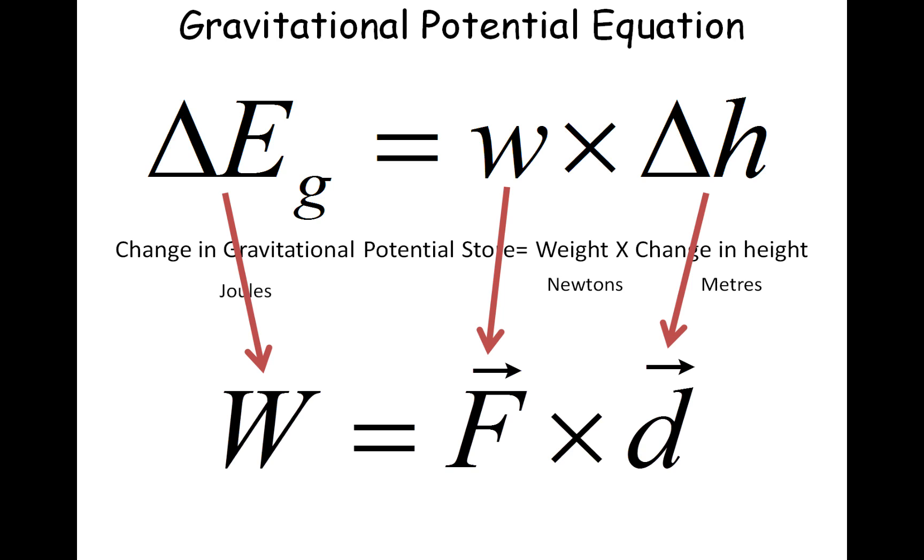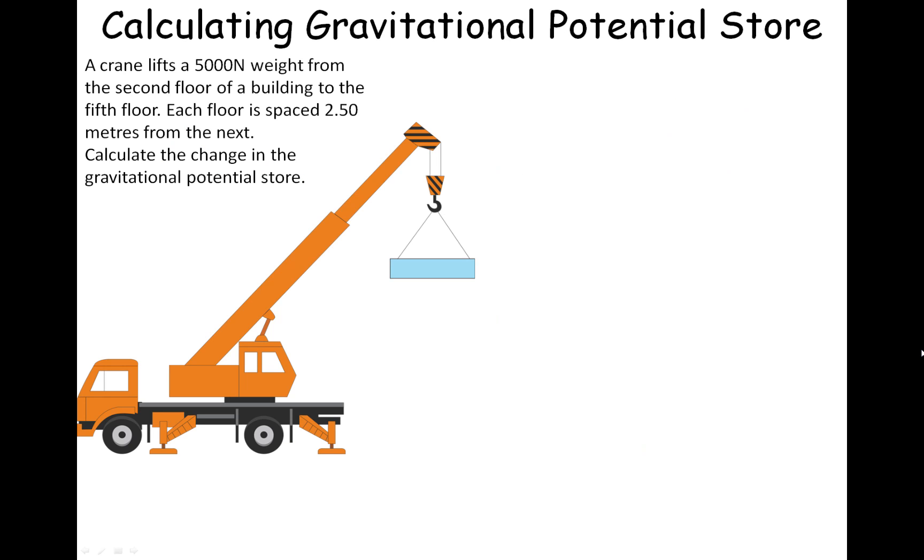So let's look at an example of this. A crane lifts a 5,000 newton weight from the second floor of a building to the fifth floor. Each floor is spaced 2.50 meters from the next. Calculate the change in the gravitational potential store.